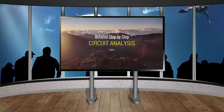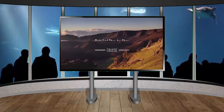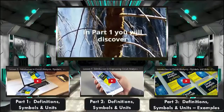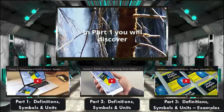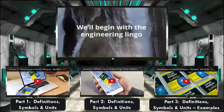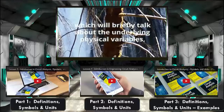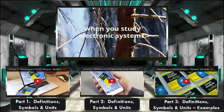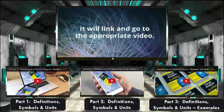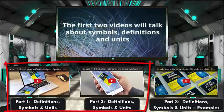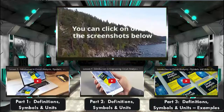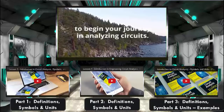So in summary, you'll get detailed step-by-step instructions in these circuit analysis courses. So let's get started. In part one, you will discover what circuit analysis is all about. We'll begin with the engineering lingo, which will briefly talk about the underlying physical variables, like charge and energy, when you study electronic systems. Below you will see video screenshots, and when you hover and then click on the screenshot, it will link and go to the appropriate video. The first two videos will talk about symbols, definitions, and units, while the third video will provide examples. You can click on one of the screenshots below to begin your journey in analyzing circuits.